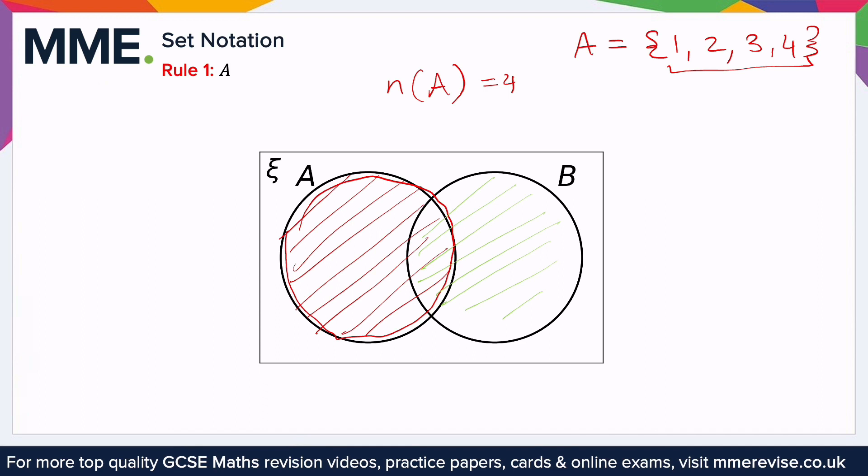Similarly, if I had maybe the set 1, 3, 2, that's 3 numbers in total, N of A would be 3, and so on.